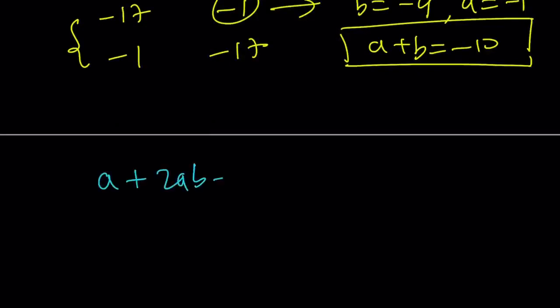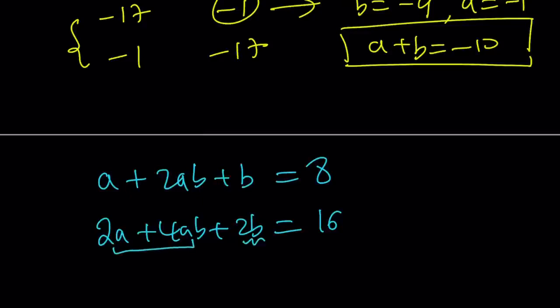So instead of dealing with fractions here, because we kind of had to take out a 2a, and then we had to deal with fractions, you could also do the following. You could multiply both sides by 2. That would give you 2a plus 4ab plus 2b equals 16. And then what you can do is since your goal is to get a common factor, notice that if I divide 4ab by 2b, by this, then I should be getting 2a.